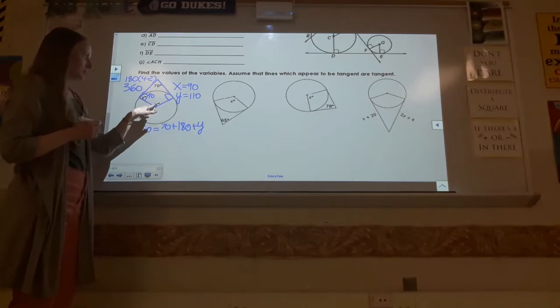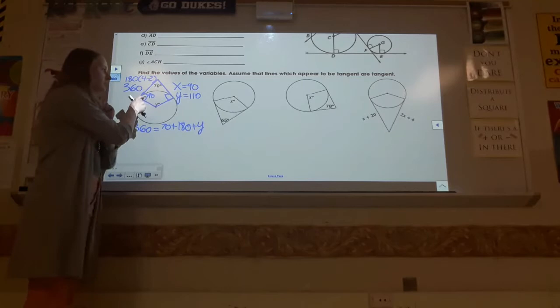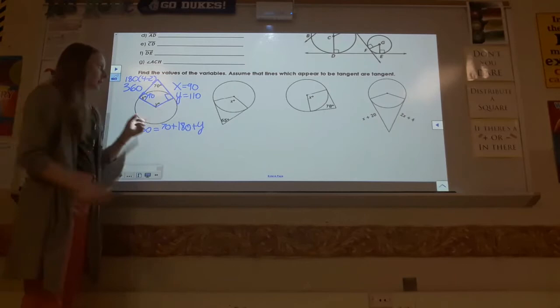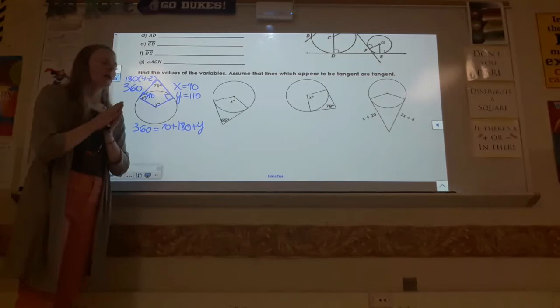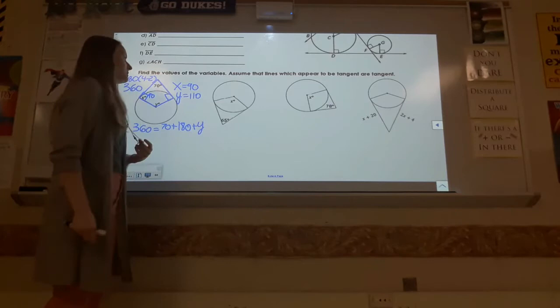Interestingly, when you put the 110 here and then look at the 70, you'll notice that those two are supplementary, and that's not a coincidence — that will always be true in this scenario. If you know that the tangent and the radius in this corner is always going to be 90 because of Theorem 1, and this corner is also always going to be 90, that automatically makes those two 180 every single time. If all four of the angles have to add up to 360, and you already know that two of them together will always be 180, that means the other two also have to add to 180 every time.